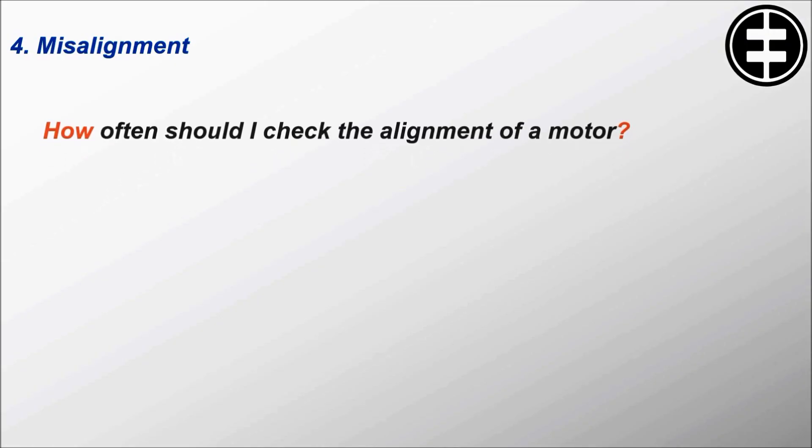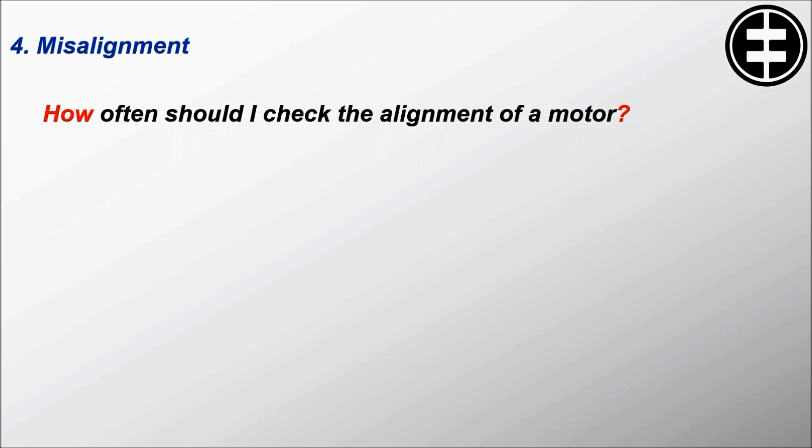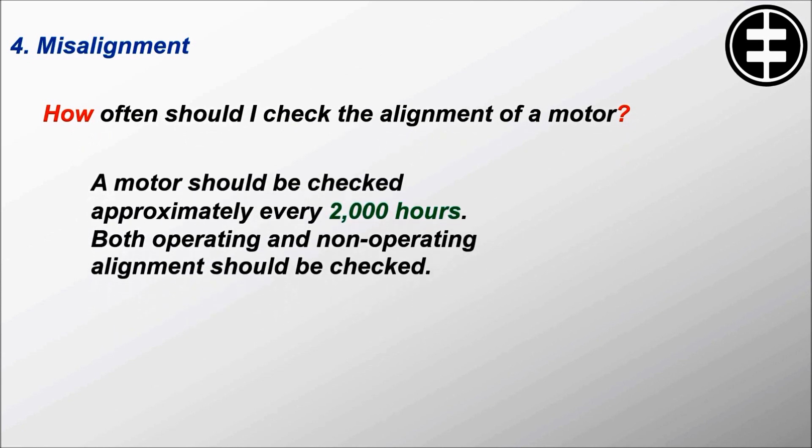How often should I check the alignment of a motor? A motor should be checked approximately every 2000 hours. Both operating and non-operating alignment should be checked.